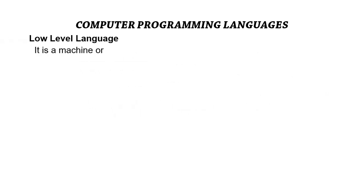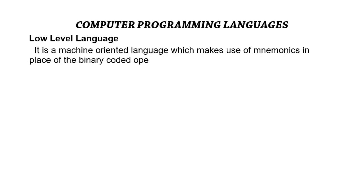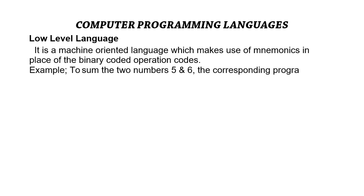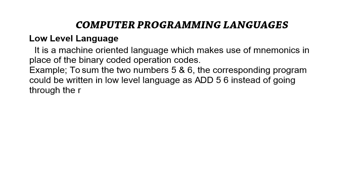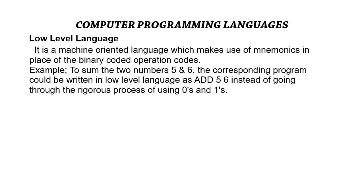The low-level language is a machine-oriented language that uses mnemonics in place of binary-coded operation codes. For instance, to add two numbers, five and six, in machine language you would write a long combination of zeros and ones. In a low-level language, you don't need to do this — you might simply write a mnemonic like "ADD 5 6" and you're done.